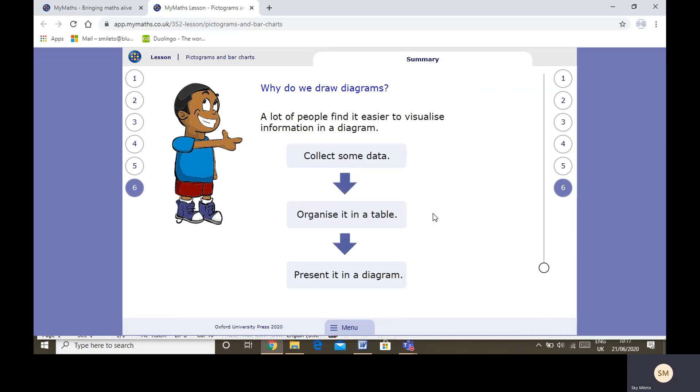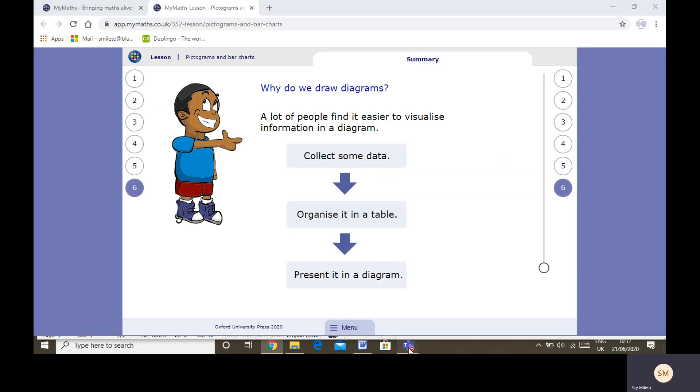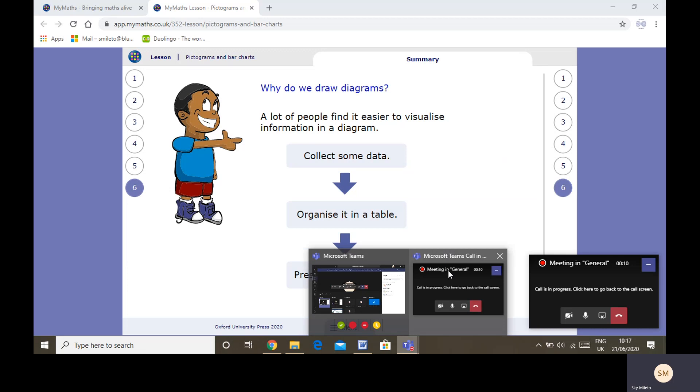Why do we draw diagrams? These are some reasons why we draw diagrams. A lot of people find it easier to visualise, which means to see the information in a diagram. So when we collect data, it's always good to organise it in a table and present it as a diagram. Now it's quite tricky, concept today. If you want to go back and watch parts of the videos again, please do. You could also have a go at the lesson to have a go at that very complicated slide with all the different numbers on the cars, or you can log into my portal and complete your MyMaths work. I hope you enjoyed today's lesson. I'll see you again tomorrow.